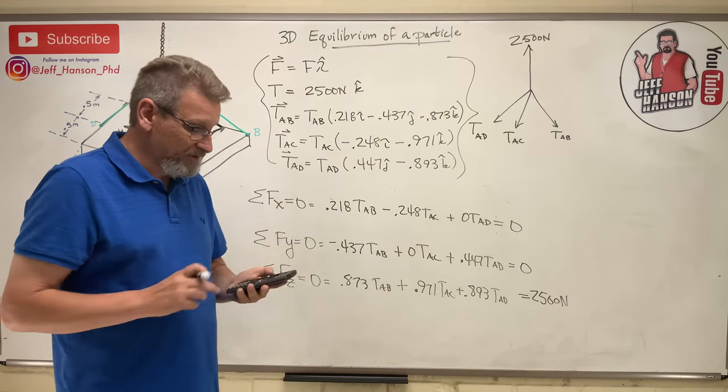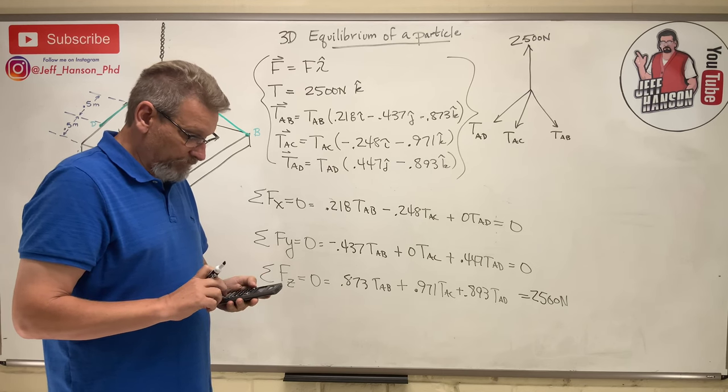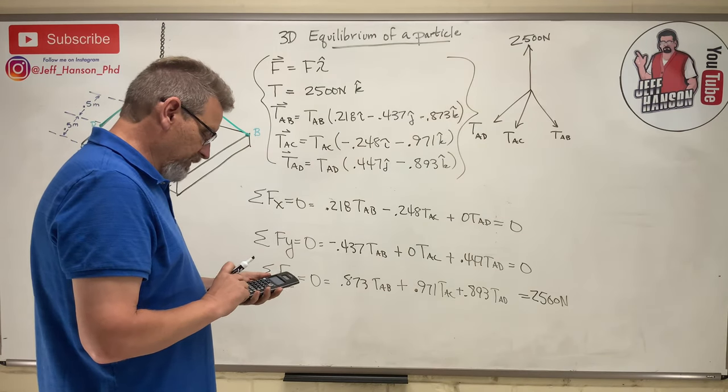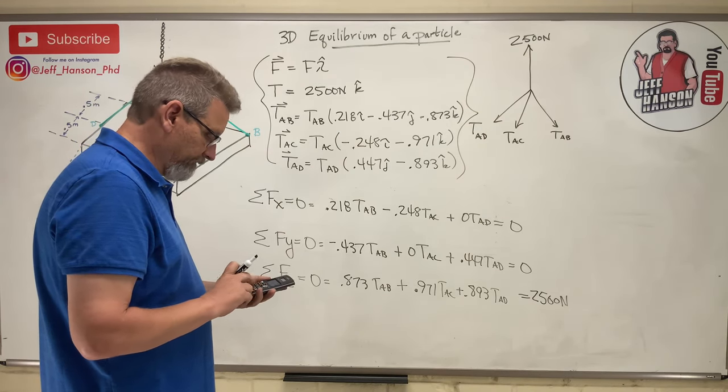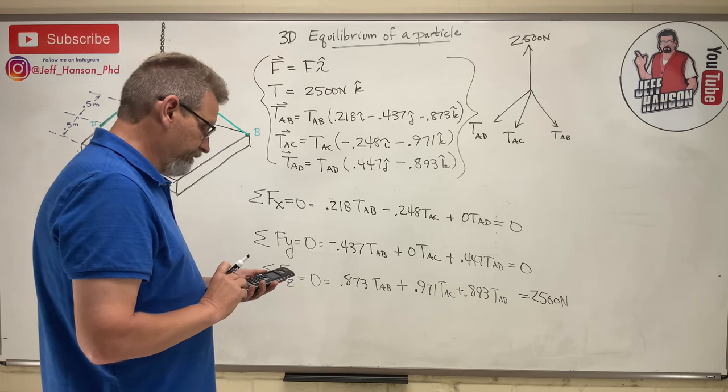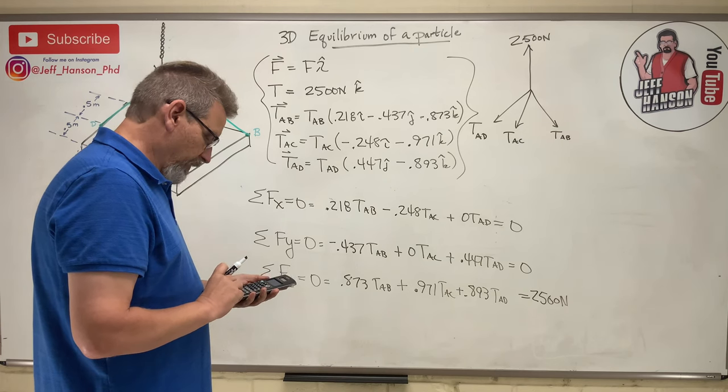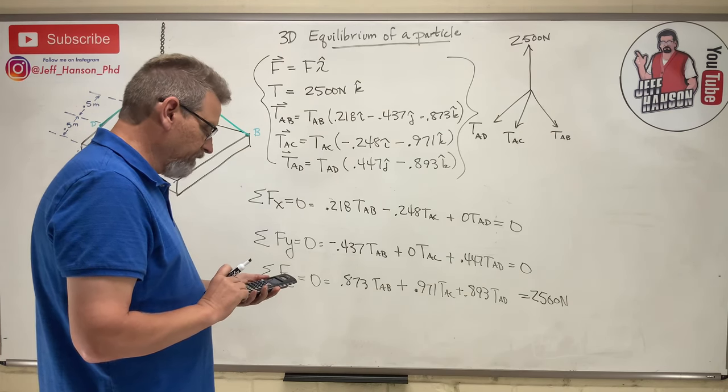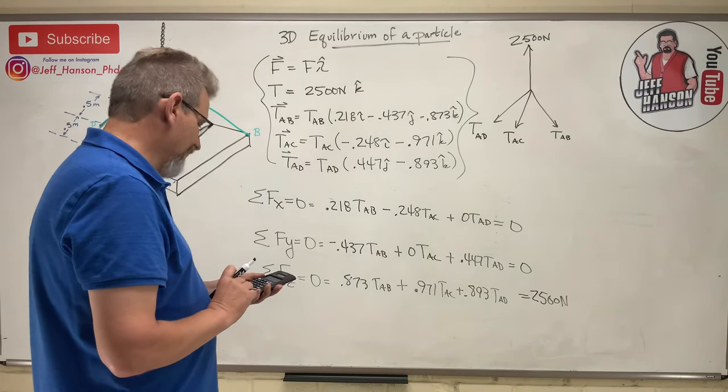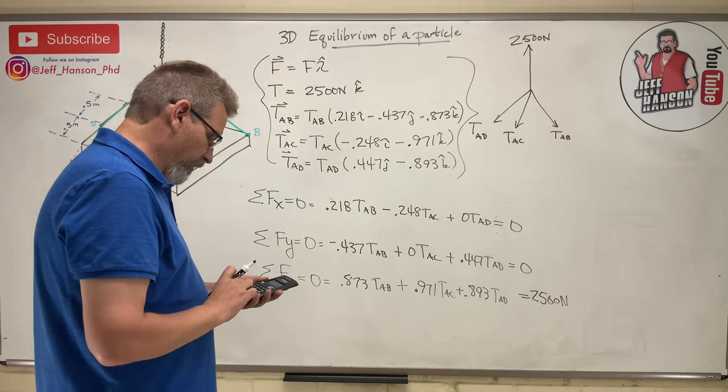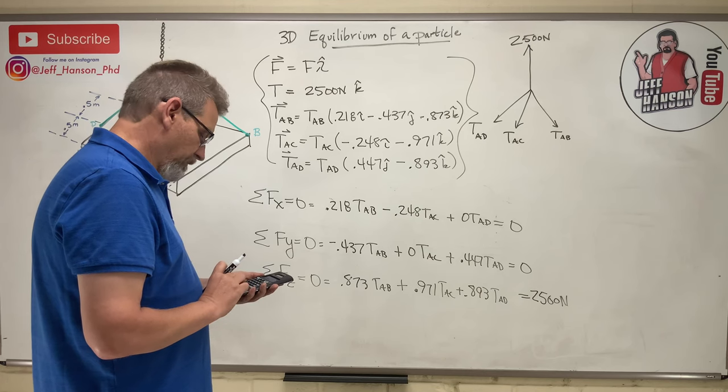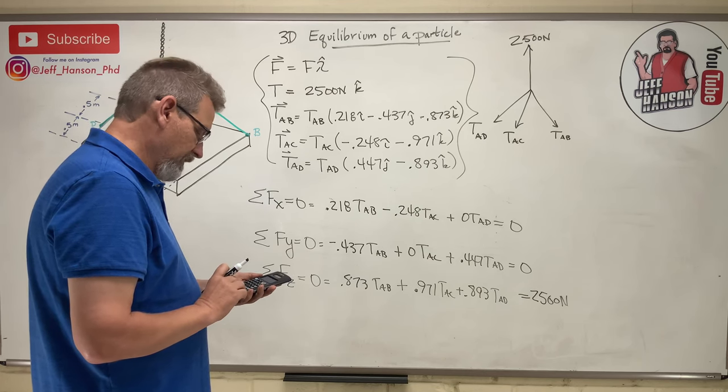TI-36 Pro, yo, what's up? Here we go. So system solver, 3 by 3, enter. All right, I'm going to put these numbers in real fast. 0.218, whoa that's not right. 2, 1, 8, enter. And then negative 0.248, enter. And then 0, enter. And 0, enter. Next line, negative 0.437, enter. 0, enter. 0.447, enter. And 0, enter.